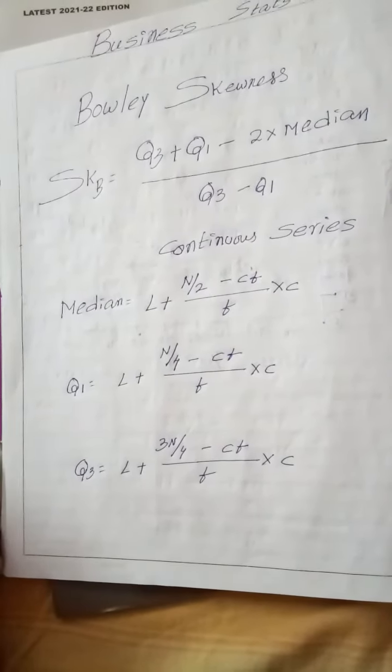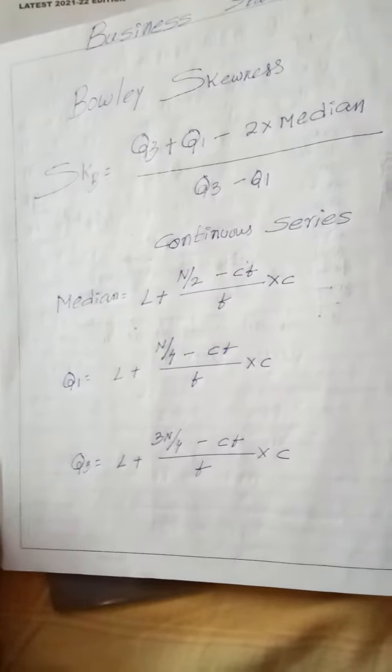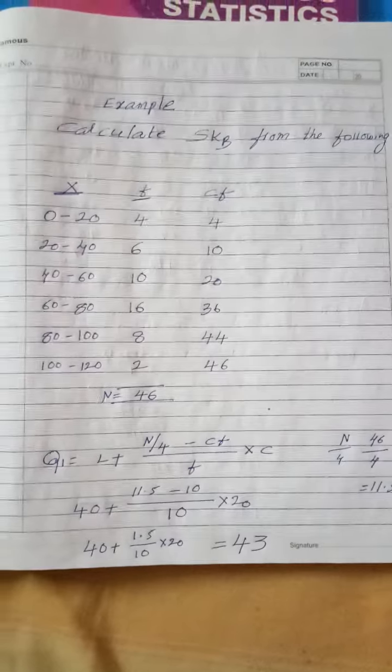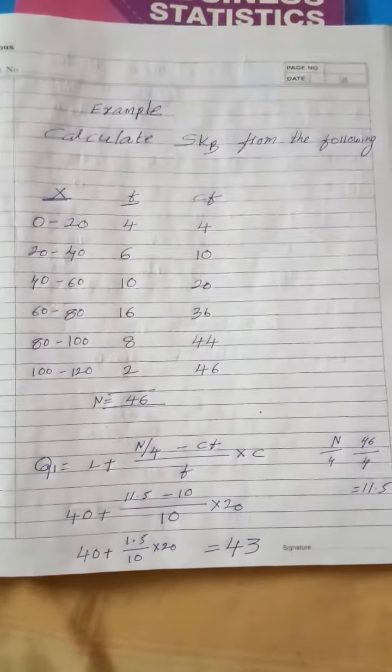Q3 plus Q1 minus 2 into median, by Q3 minus Q1. This is the problem. I will write the answer. I will tell you the correct value.